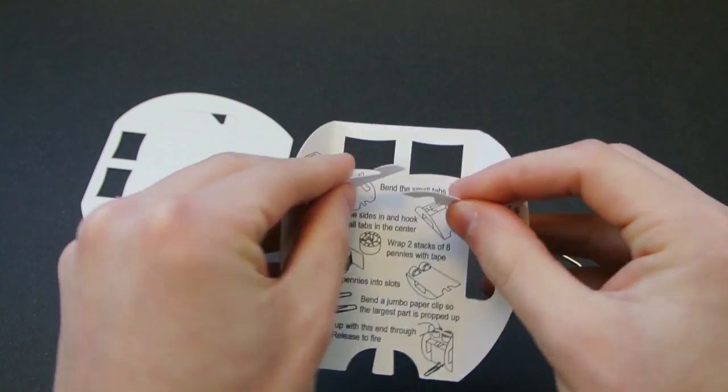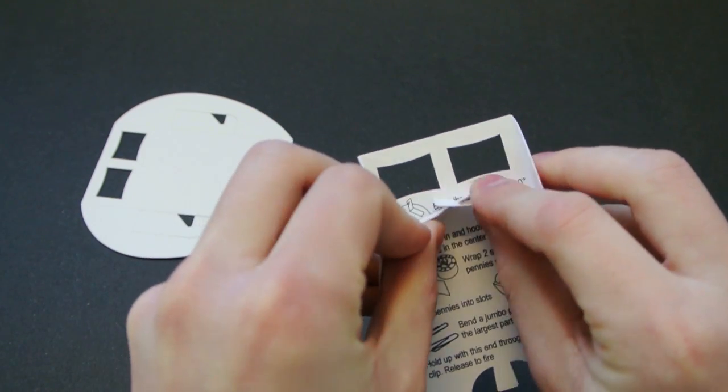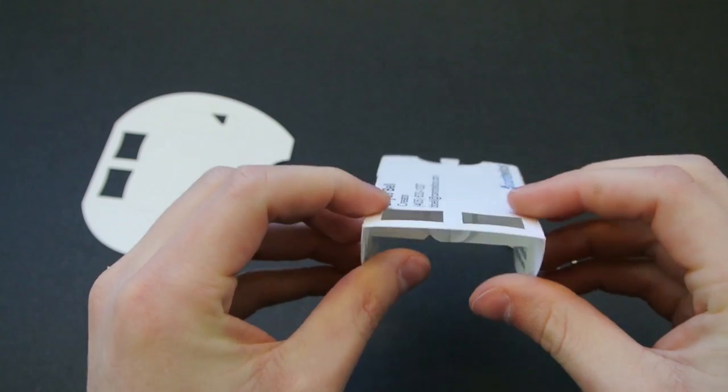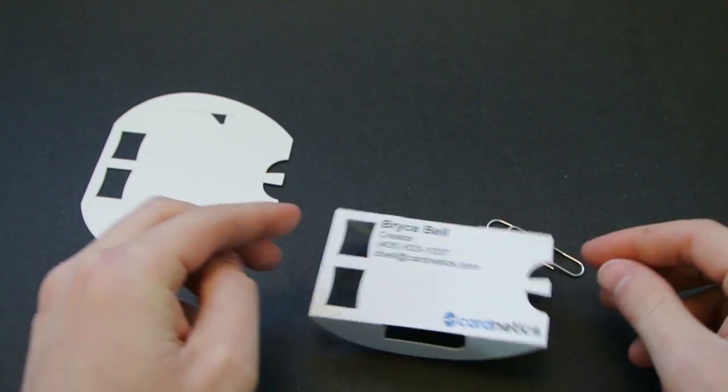It's pretty easy to operate. You just pull these tabs into the center and interlock them. And this forms the main body of the trebuchet.